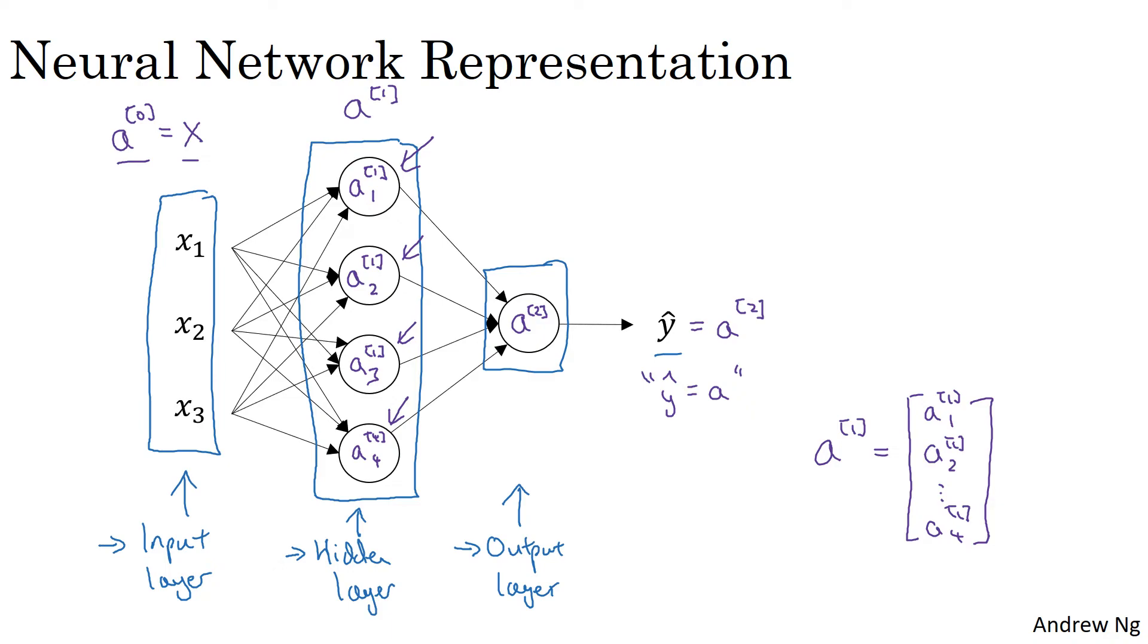One funny thing about notational conventions in neural networks is that this network that you're seeing here is called a two-layer neural network. And the reason is that when we count layers in neural networks, we don't count the input layer. So the hidden layer is layer one and the output layer is layer two. In our notational convention, we're calling the input layer layer zero.